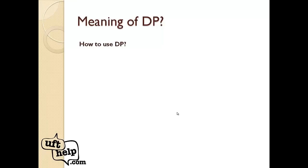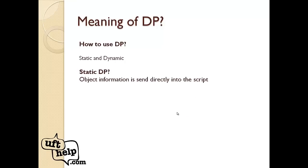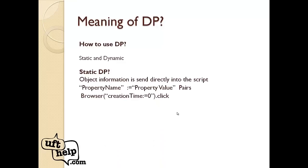Now, how to use DP. There are two practical implementations: one is called Static and another is called Dynamic. In Static DP, we pass object information directly into our code using combinations of property name and property value pairs. These pairs are always separated by colon-equals. For example, to click a browser object, we use the property 'creation time' colon-equals '0'.